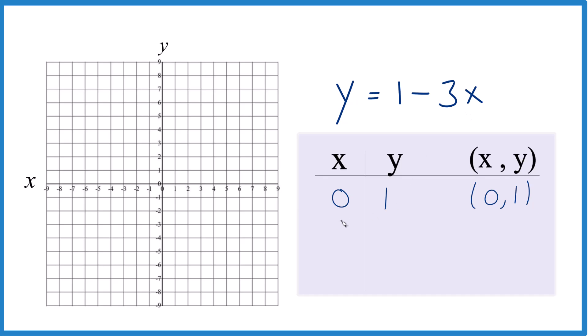Next, let's just put in 1 for x. So 3 times 1 is 3, so 1 minus 3, that gives us negative 2. So we have another point there, 1, negative 2.